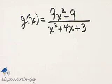What is the domain of g of x? We're going to assume that the domain is a set of real numbers except those real numbers that make the denominator zero.